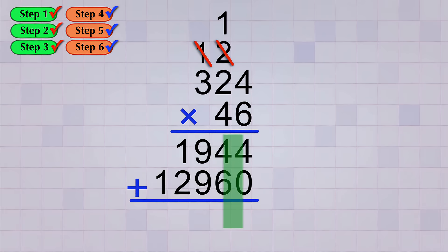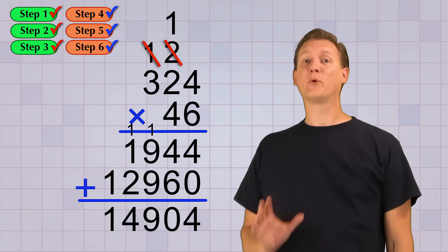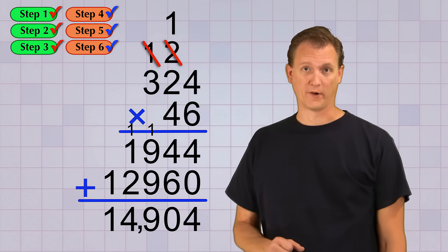Now we can add them, column by column, starting from the ones place just like we did in the multi-digit addition video. 4 plus 0 equals 4. 4 plus 6 equals 10, so we carry the 1. 1 plus 9 plus 9 equals 19, so we carry the 1 again. 1 plus 1 plus 2 equals 4. And then our last answer digit is just 1. There! Our final answer is a pretty big number, 14,904.